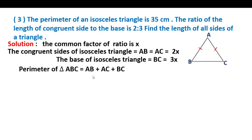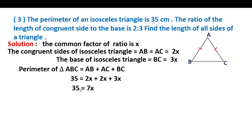The perimeter of triangle ABC = AB + AC + BC. The perimeter given is 35. So 35 = 2x + 2x + 3x. Adding all x terms: 35 = 7x. Dividing both sides by 7: x = 35 upon 7, therefore x = 5.